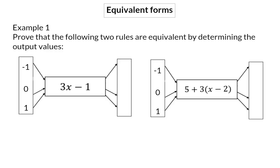If we now start off by substituting minus 1 into the first rule, you will have minus 3 minus 1, which gives you an output value of negative 4. If I substitute in 0, I will have 0 minus 1, which gives me minus 1. And when I substitute 1 in, I will have 3 minus 1, which is an output value of 2.